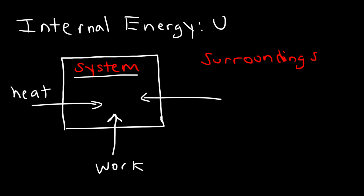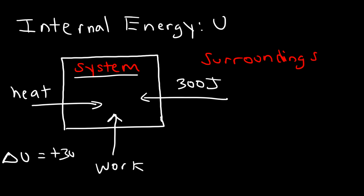Those are the two ways in which a system can increase its internal energy: by the transfer of heat energy into the system, or if the surroundings perform work on the system. For example, if the surroundings perform 300 joules on a system, the system's internal energy goes up by 300 — Delta U increases. The energy of the surroundings, however, decreases by 300, so energy is not created or destroyed, it is simply transferred.